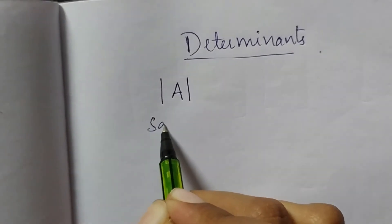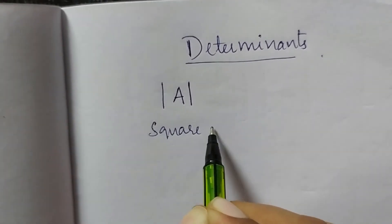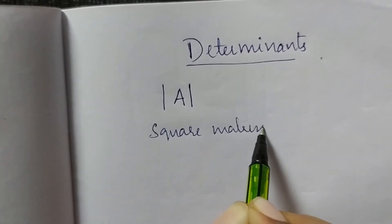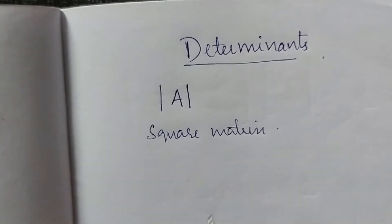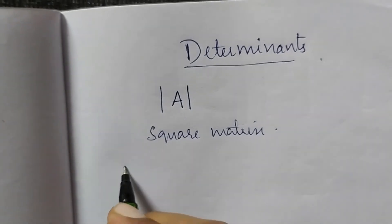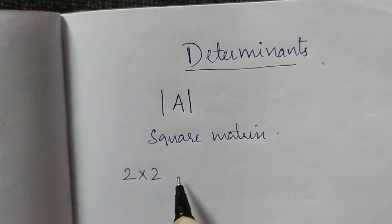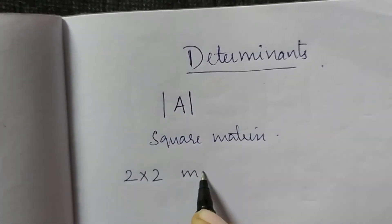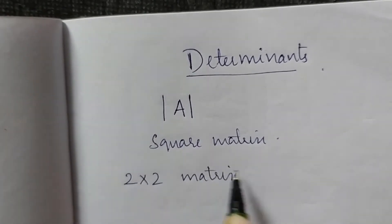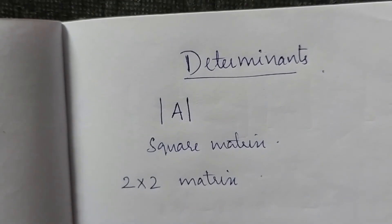What is a square matrix? It has an equal number of rows and columns. For example, a 2 by 2 matrix has 2 rows and 2 columns, and we can find its determinant.